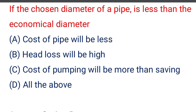Next question: if the chosen diameter of the pipe is less than the economical diameter, then — option A cost of pipe will be less, option B head loss will be high, option C cost of pumping will be more than saving, option D all of the above. The correct answer is option D, all of the above.